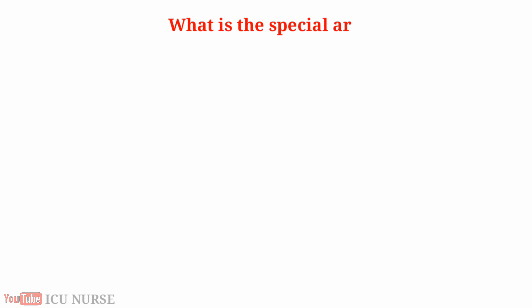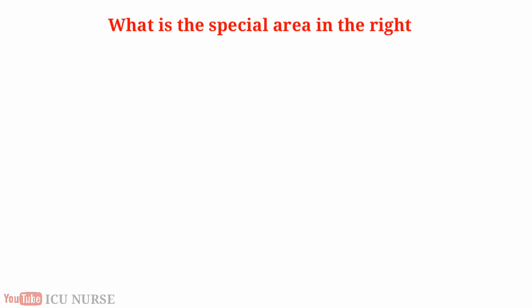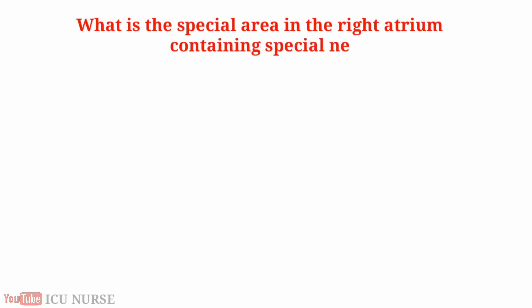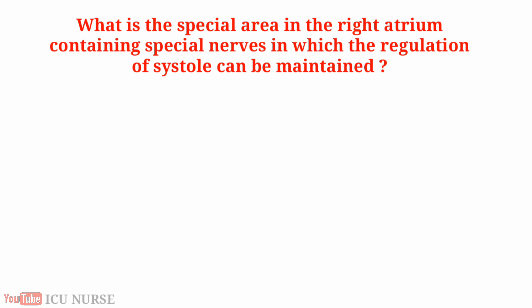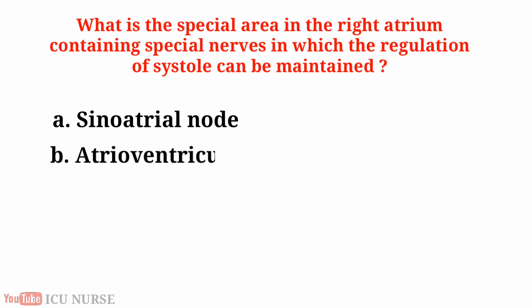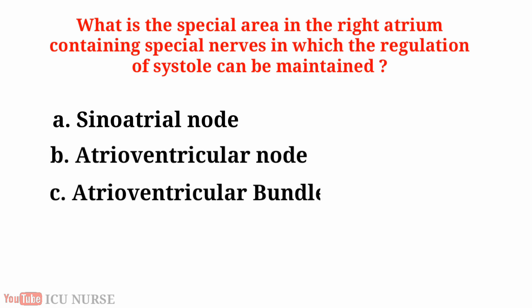What is the special area in the right atrium containing special nerves in which the regulation of systole can be maintained? A. Sinoatrial node, B. Atrioventricular node, C. Atrioventricular bundle, D. Purkinje fibers.